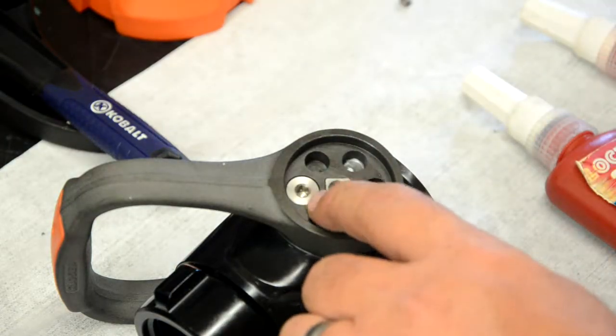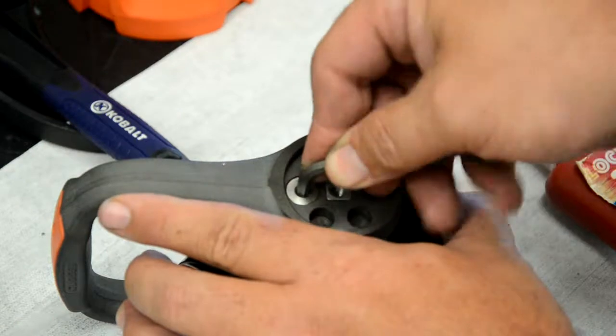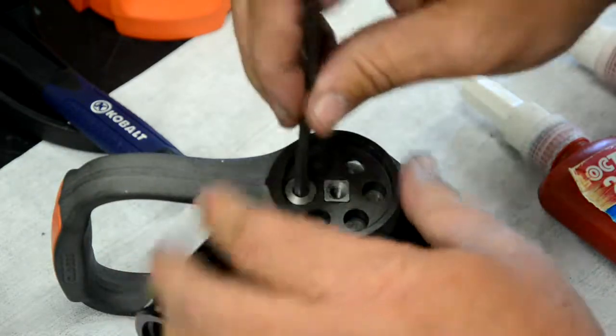Next, we're going to remove the larger cam stop screw from the bail handle before moving onto the dog point set screw inside of the actuator shaft.